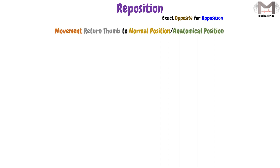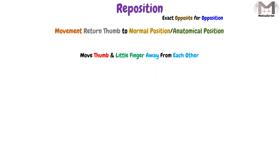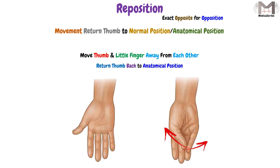The reposition, on the other hand, is the exact opposite of opposition. This term describes the movement that will return the thumb — the first digit of the hand — from the opposition position back to the anatomical or normal position. So in the previous example of the thumb and the little finger, reposition moves them away from each other and brings the thumb back to its anatomical or normal position.